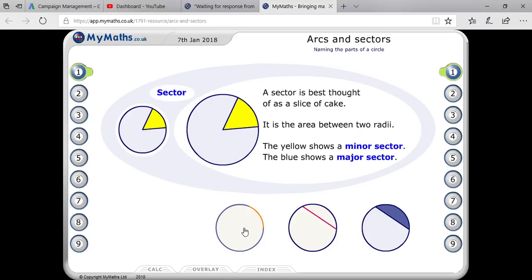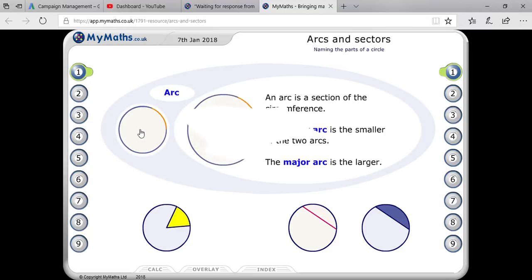Next one is your arc. Whatever orange color on the circumference you are seeing, it is your arc. The shortest length on the circumference is known as the minor arc, and the longest length on the circumference is known as your major arc.